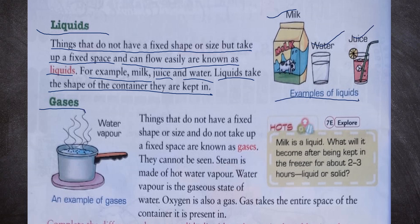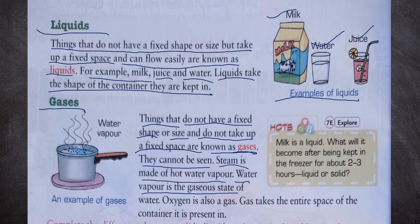Now gases. Things that do not have a fixed shape or size and do not take up a fixed space are known as gases. They cannot be seen. Steam is made of hot water vapor. Water vapor is the gaseous state of water. Oxygen is also a gas. Gas takes the entire space of the container it is present in. We can see an example of gases — water vapor.